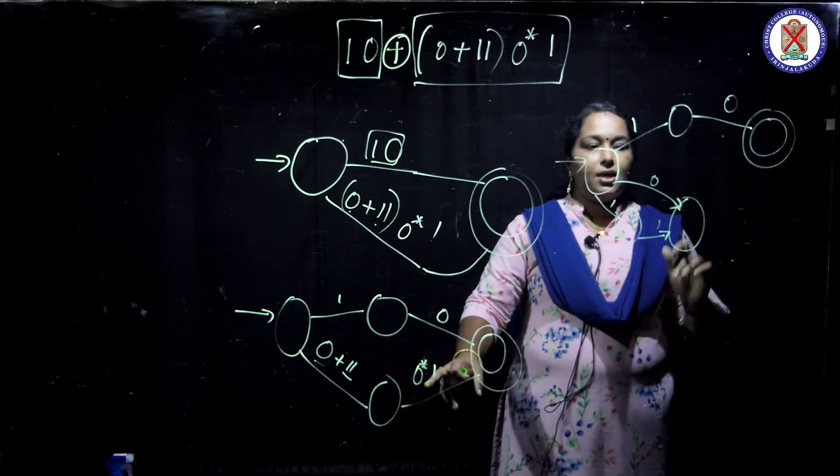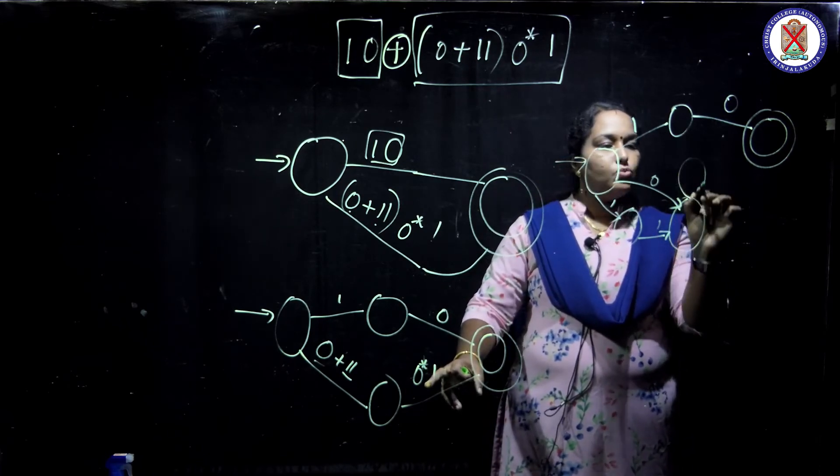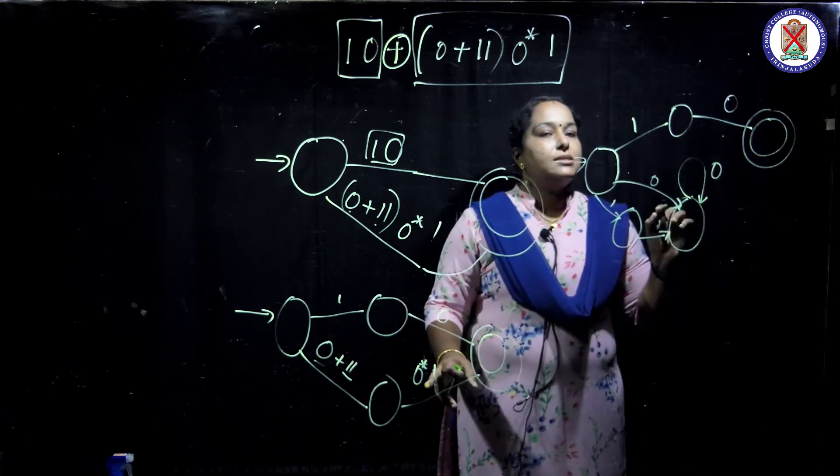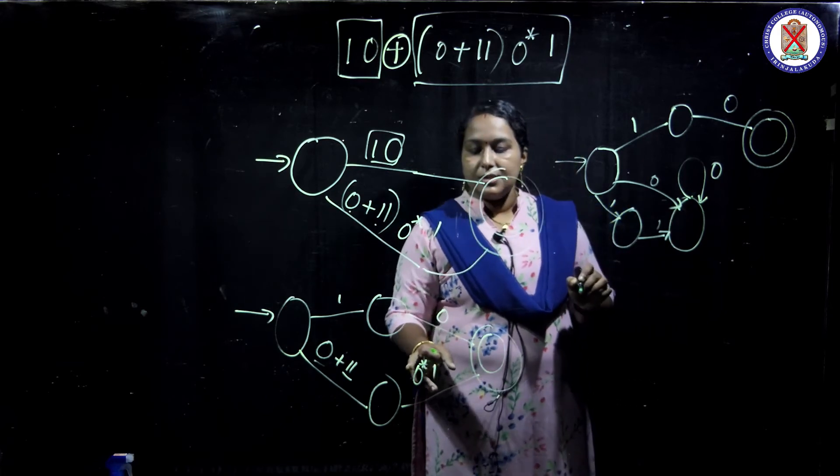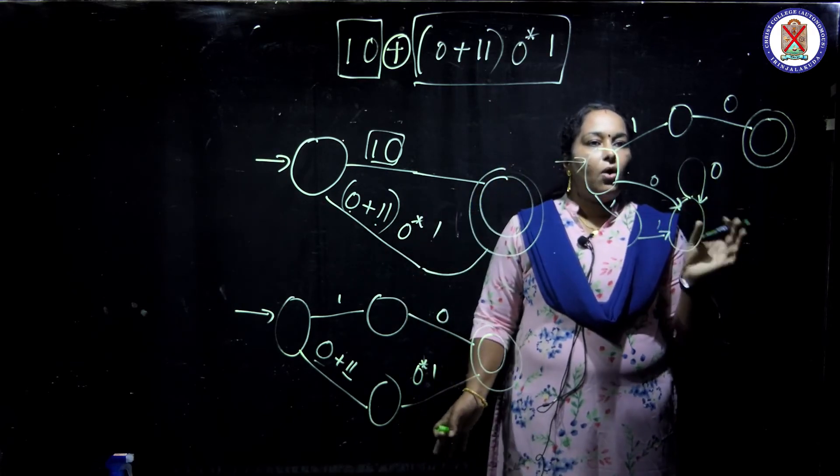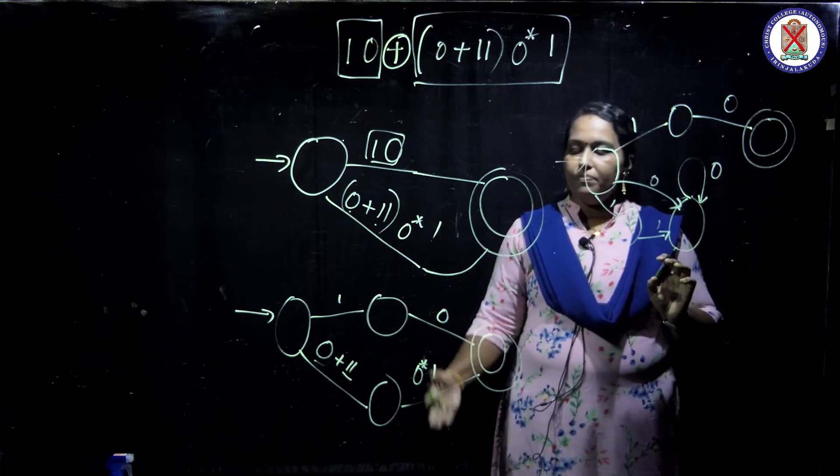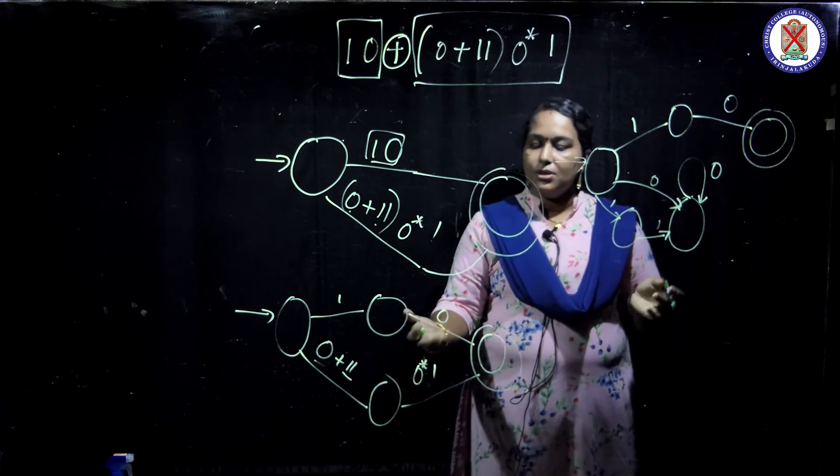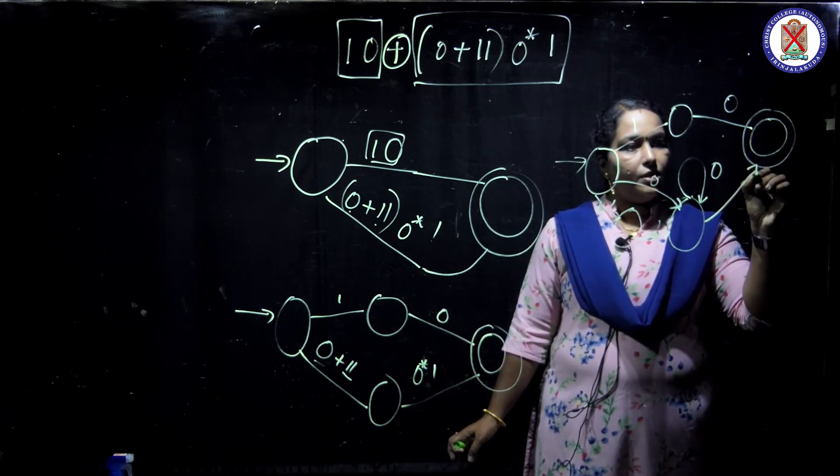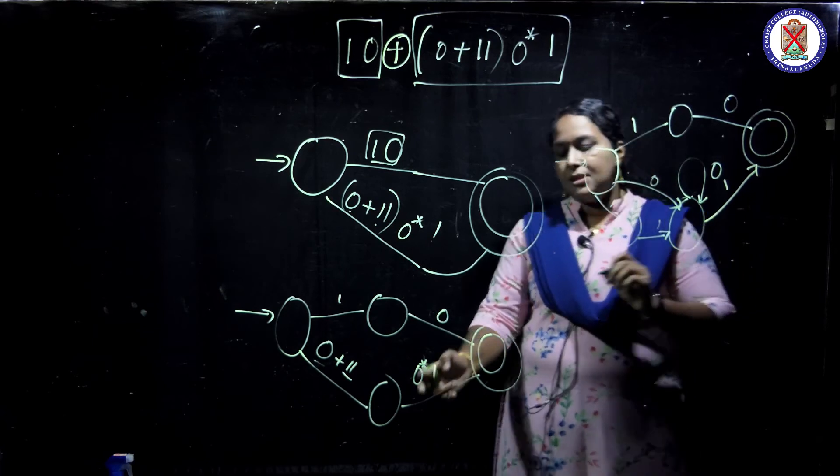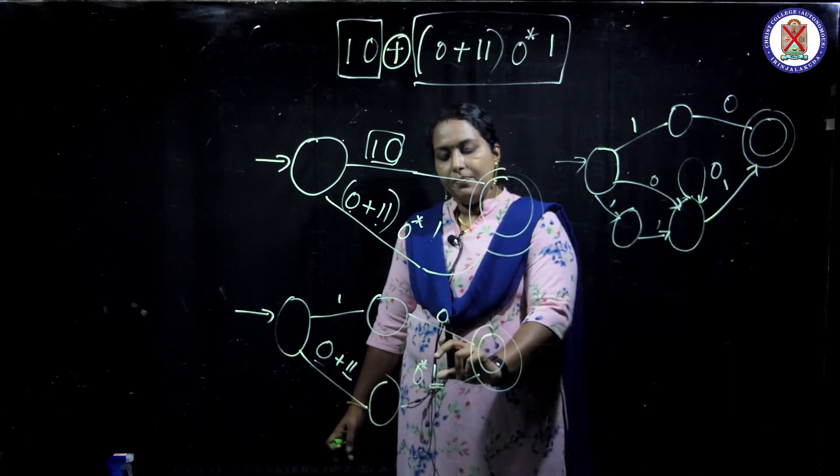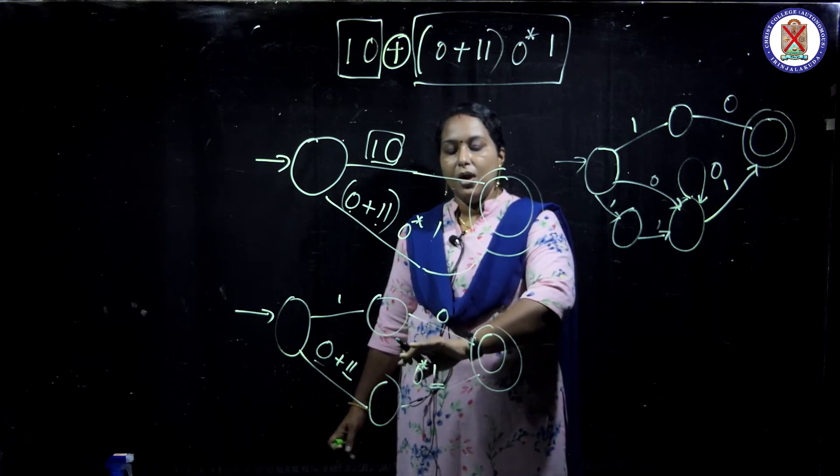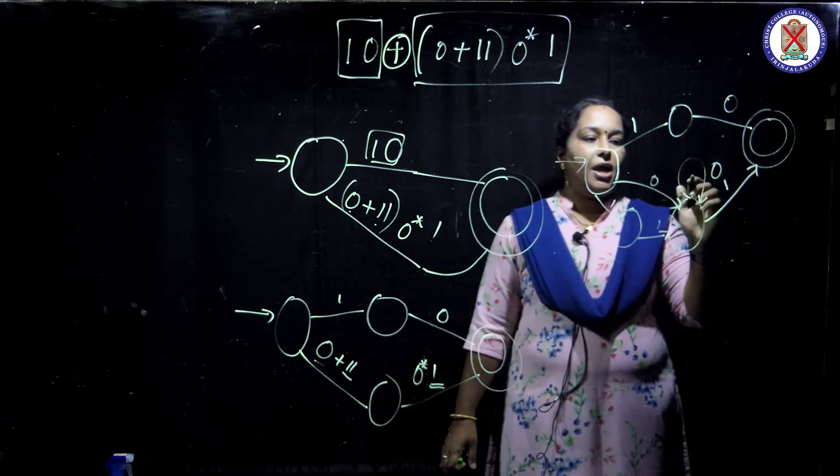Next is zero star. Star means one or more combination. This means what? Self loop. I have already said star means self loop. That is zero star. Zero occur or not, it is not a problem. It can occur, it's better. Otherwise it can't occur, that is also accepted. And it will give with one. One is the necessary condition, but zero is the sufficient condition. That is, it can occur or not, it can be bypassed.